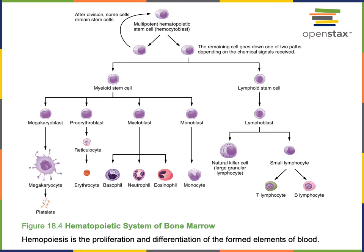Myeloid stem cells can form platelets, erythrocytes, basophils, neutrophils, eosinophils, and monocytes. In contrast, the lymphoid stem cell forms all of the lymphocytes, including B lymphocytes, T lymphocytes, and natural killer cells, which are important for innate immunity. A myeloid stem cell will further differentiate into immature cells called megakaryoblasts, which can mature into megakaryocytes that form platelets, or thrombocytes, as cytoplasmic fragments from the megakaryocytes found in the red bone marrow.